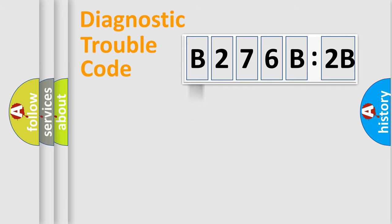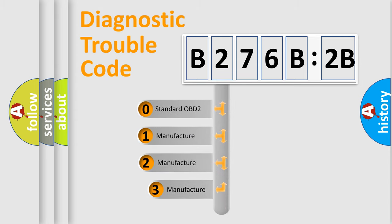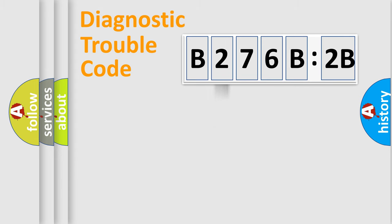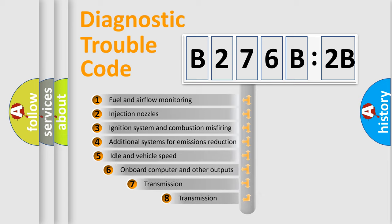Powertrain, Body, Chassis, Network. This distribution is defined in the first character code. If the second character is expressed as zero, it is a standardized error. In the case of numbers 1, 2, 3, it is a more prestigious expression of the car-specific error.